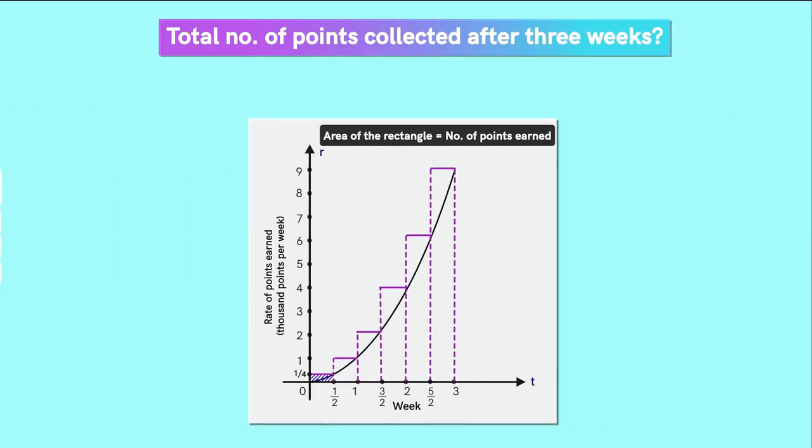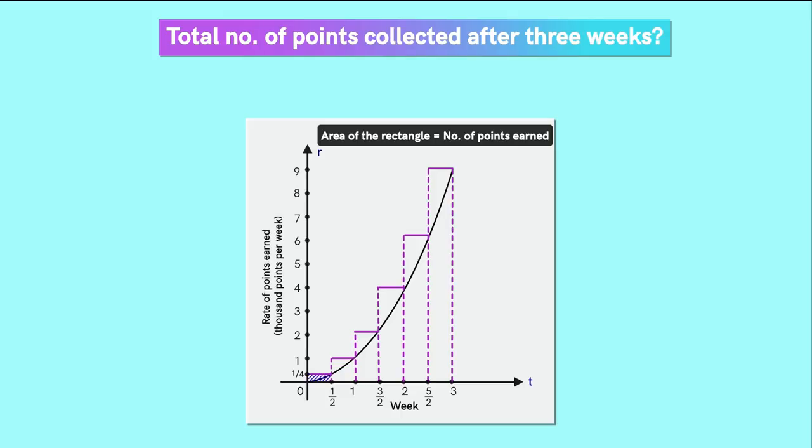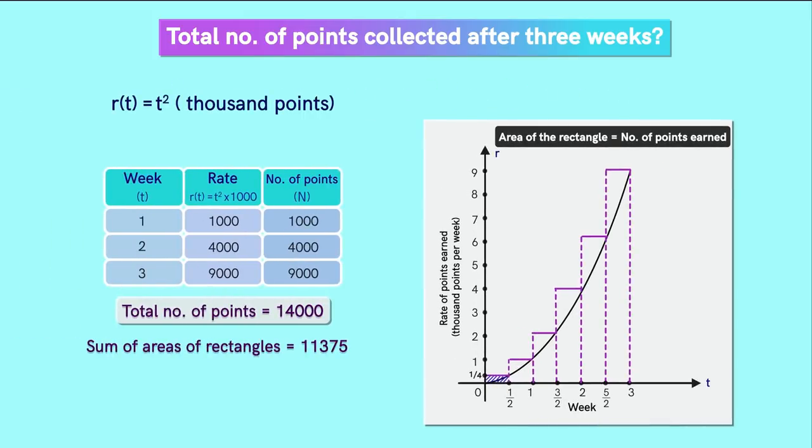Now we know that the total points earned will be equal to the sum of the areas of these rectangles. After doing these calculations and adding, we will get the answer as 11,375 points. Earlier, we got the total as 14,000 points and now it is this number. This is a better estimate than the previous one because the rate considered here is closer to the graph.